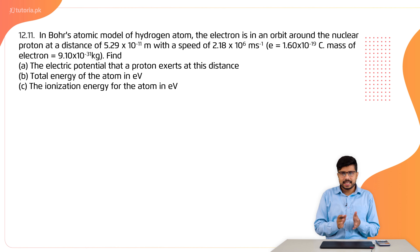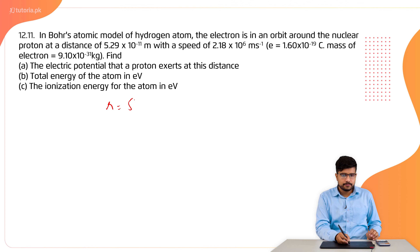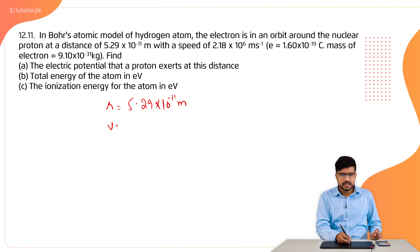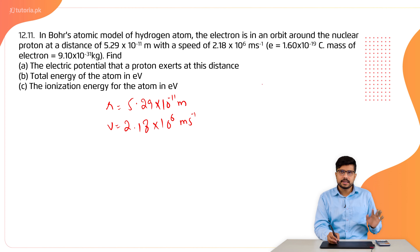First of all, let's see what data is given. The distance is 5.29 × 10⁻¹¹ meter. The speed given is 2.18 × 10⁶ meter per second. And we have the charge of the electron and its mass already known.